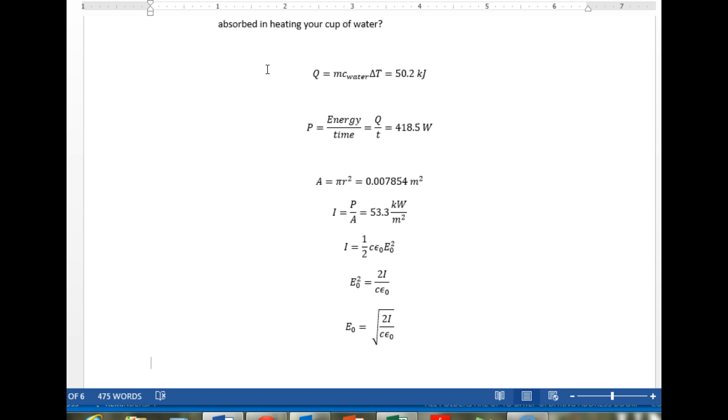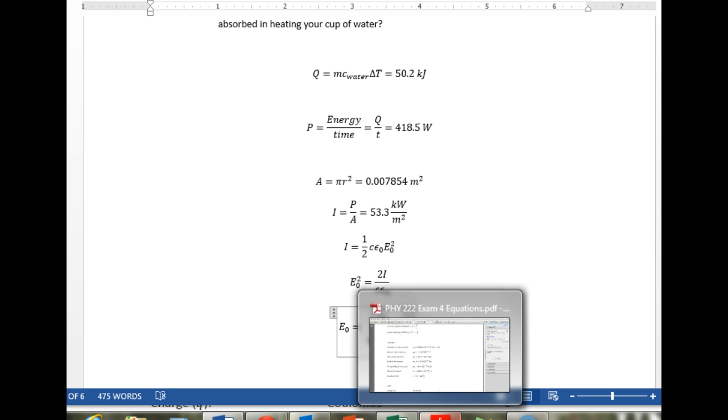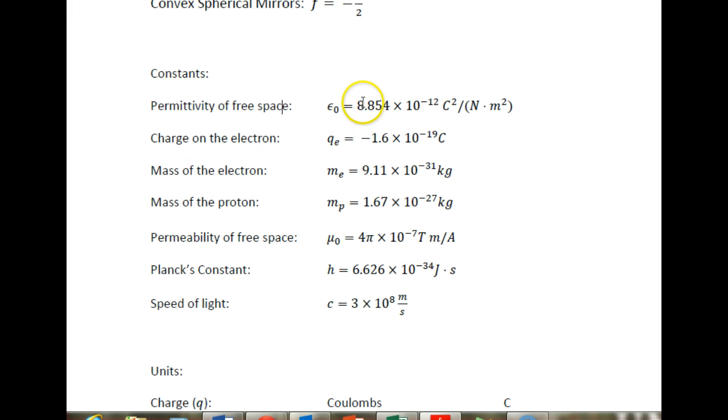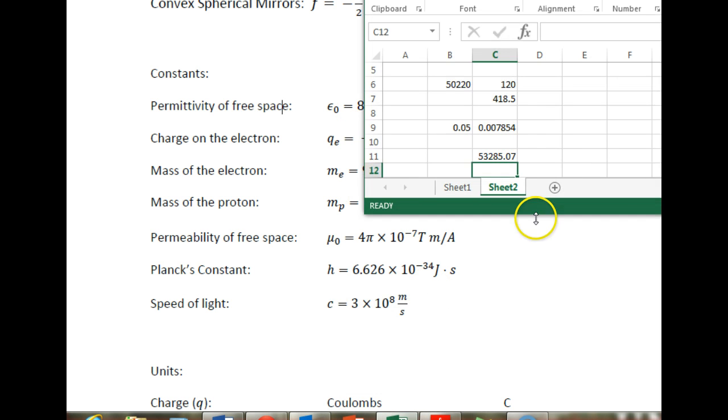And there you have the formula. We have the intensity, we know the speed of light, we know epsilon naught once we look it up. So at this point, we're talking about plugging everything into the formula and coming up with an answer. Let's pop over to Excel. And on our way to Excel, we'll grab the value of epsilon naught, which is 8.854 times 10 to the minus 12th.